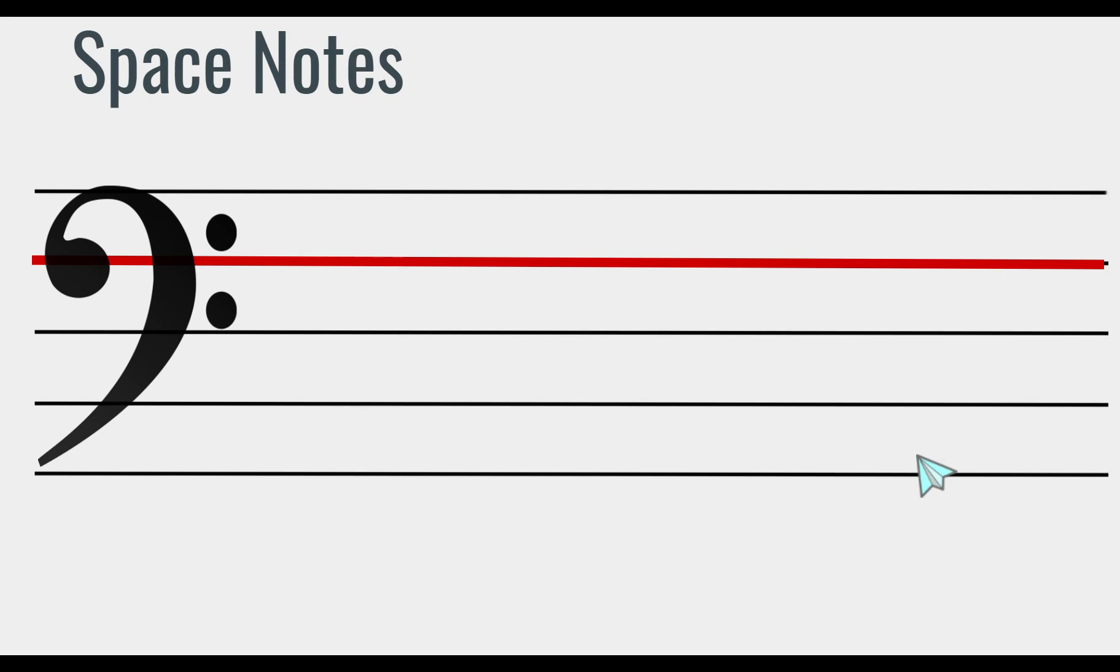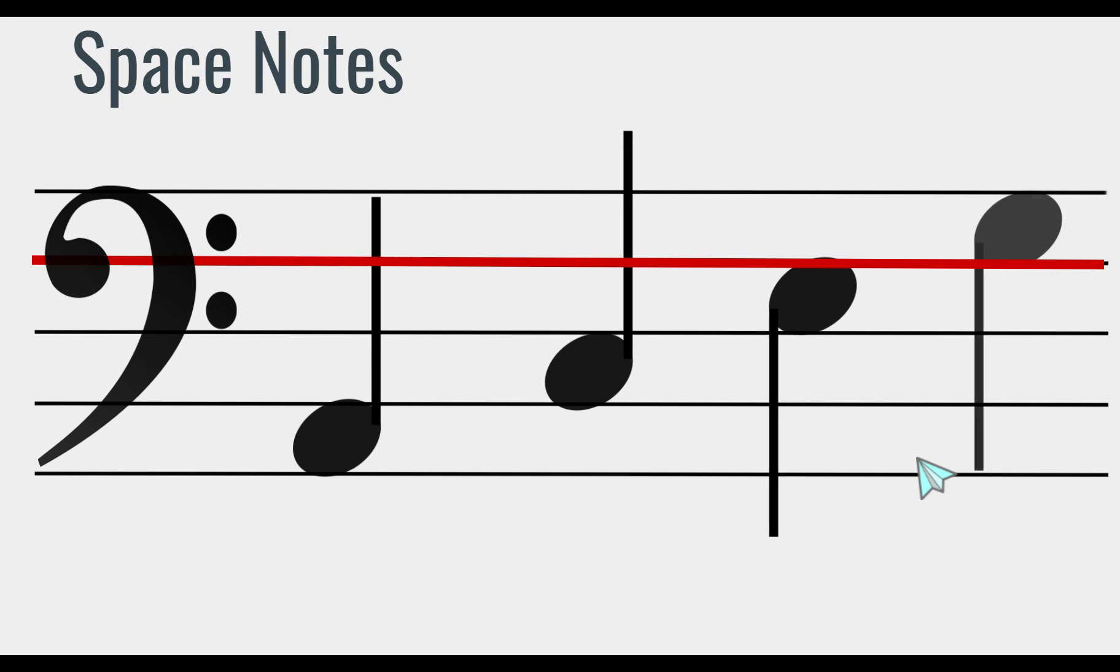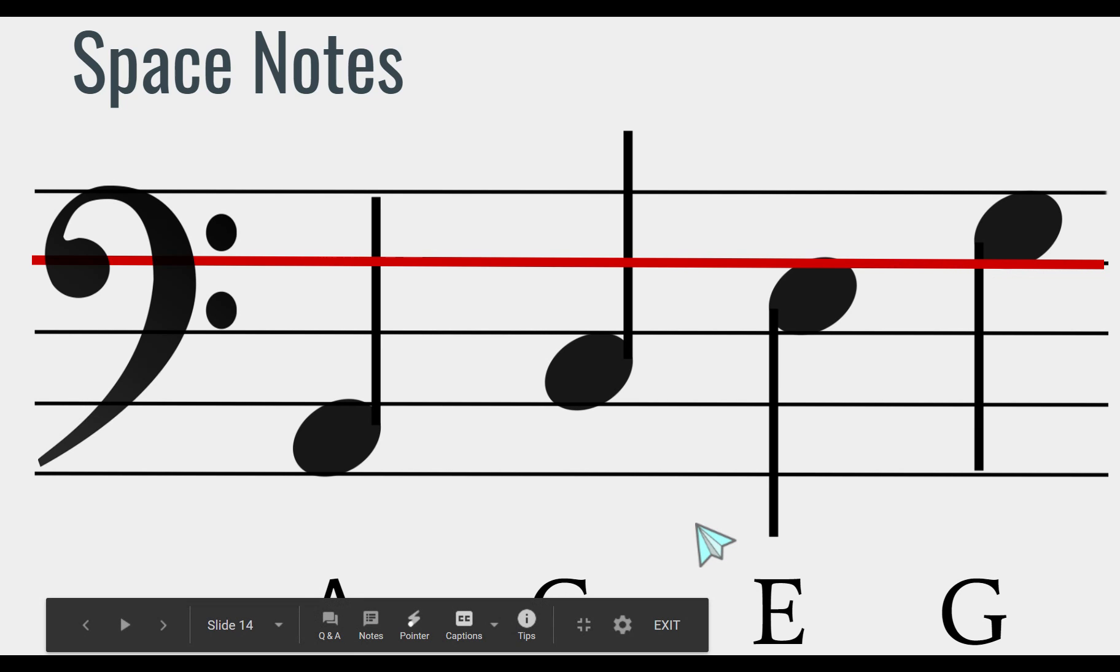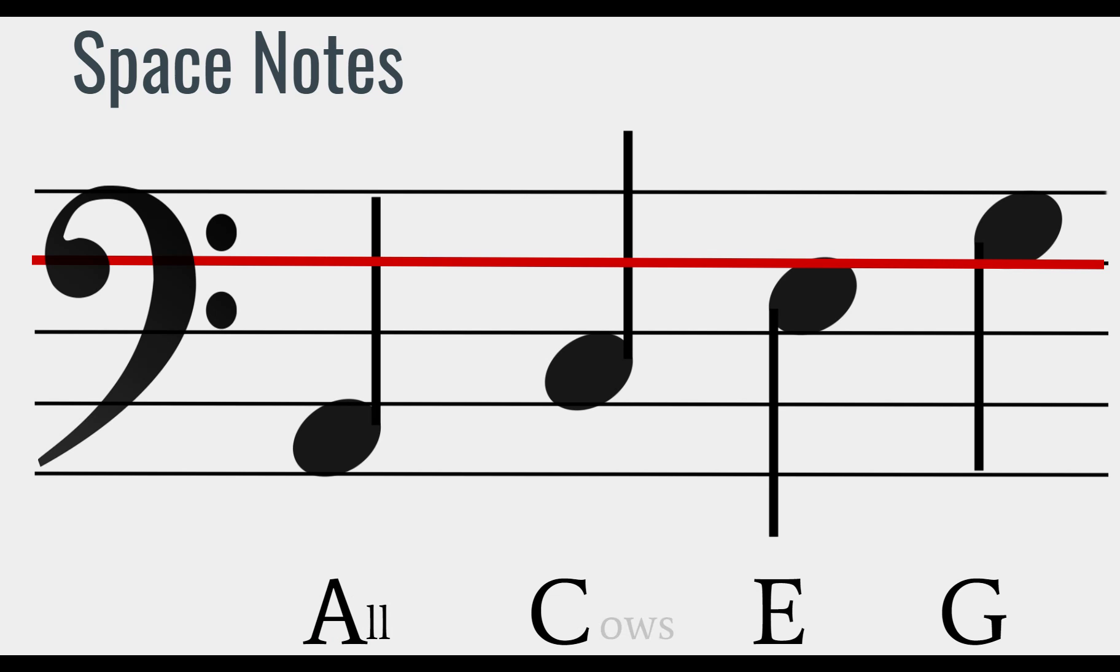All right. Here are the space notes on the bass clef. And we know them as A, C, E, and G, which makes sense because if this is F, one above F would be G, one below F would be E. And the acronym here that will help us is all cows eat grass.